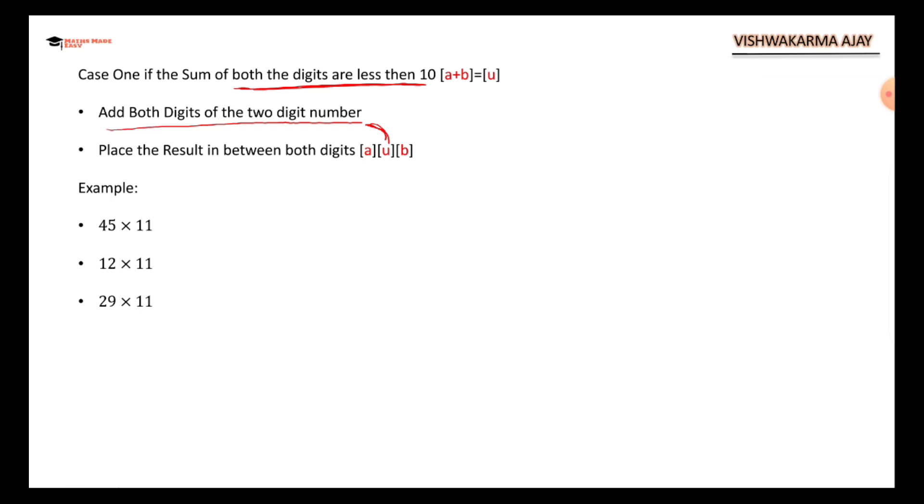Let's see with an example. I want to multiply 45 with 11. What I'm going to do is I will be adding 4 and 5. See, 4 plus 5 is 9, which is less than 10. So 4, 5, between these two digits I will be writing 9. That's it, it's done.